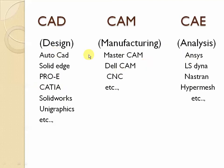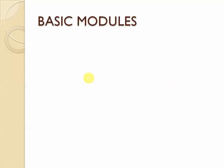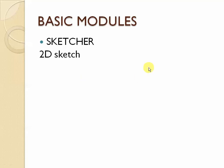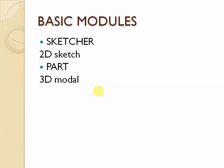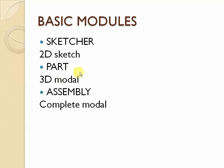Let us go to CAD — Computer-Aided Design. There are mainly four basic modules in every software. First one: Sketcher. In Sketcher, we will be drawing a 2D sketch which has only two dimensions. Second: Part module. In the part module, we will be drawing a 3D model — having X, Y, and Z directions. For example, let us take a pen and divide it into three parts: a cap, a body, and a refill. All three parts are drawn separately in the part module.